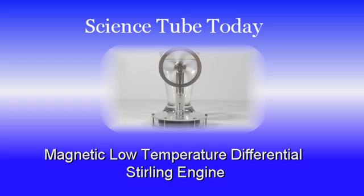The magnetic low temperature differential Stirling engine is a true marvel of engineering and science, and it is as challenging to explain as it may be to understand. The main difference between this model and other Stirling engines is the use of magnetism in place of a physical linkage to drive the displacer.